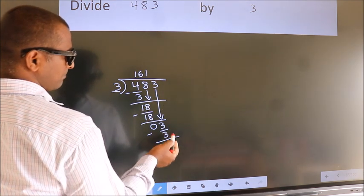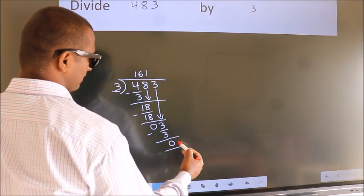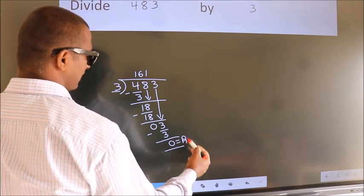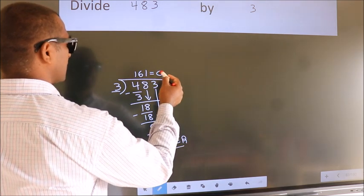No more numbers to bring it down. So we stop here. This is our remainder. This is our quotient.